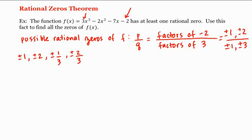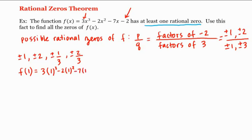We know at least one of these will work because we're told the polynomial has at least one rational zero. So let's start trying these possibilities — beginning with one. We know one is a zero of f if f of one equals zero. We get three times one cubed, minus two times one squared, minus seven times one, minus two. That's three minus two, which is one; one minus seven is negative six; negative six minus two is negative eight. So one is not a zero.